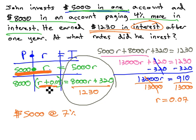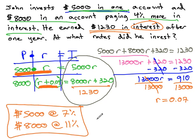The other rate is 4% higher, so to get the 4% higher, we add 4% to that, and we get 11% for the $8,000 investment.